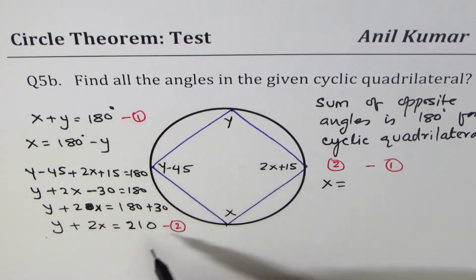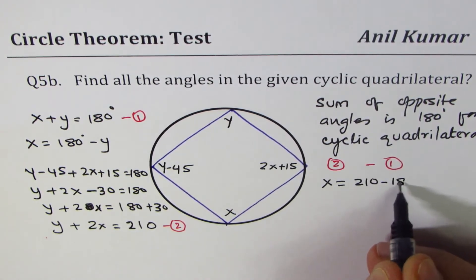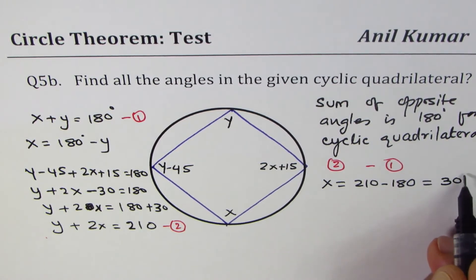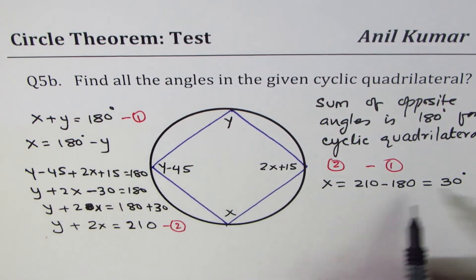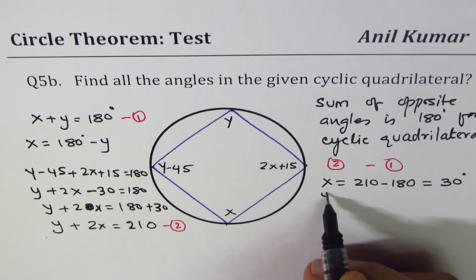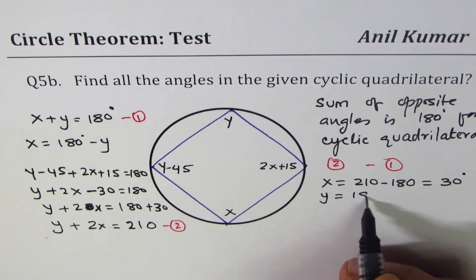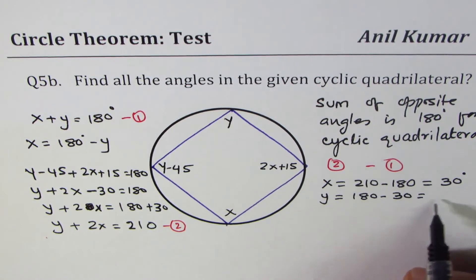So we get x equals to 210 minus 180, and that is 30 degrees. So if x is 30 degrees, then what is y?